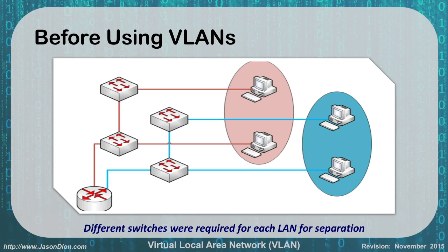Before we used VLANs, we had different switches for each of these networks — you can see the red network and the blue network, with a different switch for each one. And if the computers were on different floors, we might have two different switches serving those. The blue PCs went to each of the blue switches tied together going back to a single router, and the red network was also tied together through that router, which broke up those broadcast domains into the red and blue networks.